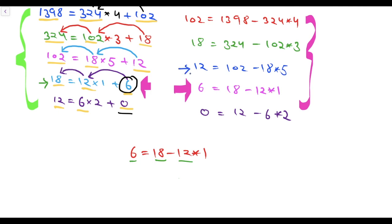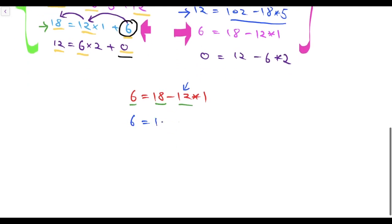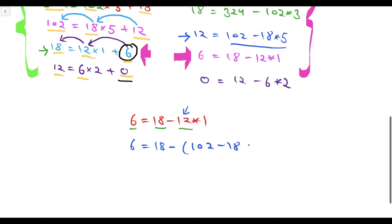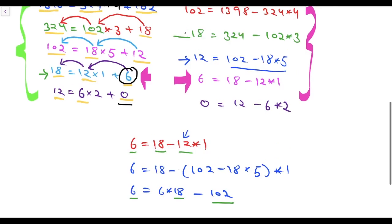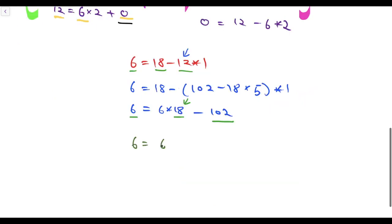From the previous step we know 12 can be written as 102 minus 18 into 5, so let's substitute the value of 12 here. This will become 6 equals 18 minus (102 minus 18 into 5) into 1, which will become 6 equals 6 into 18 minus 102. Now the variables are 6, 18, and 102. From this equation we can write 18 as 324 minus 102 into 3, so let's substitute the value of 18 here. This equation will become 6 equals 6 into (324 minus 102 into 3) minus 102.